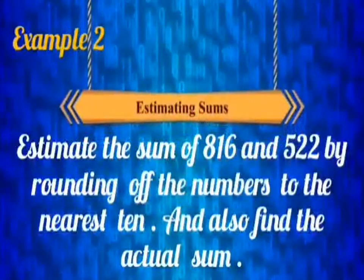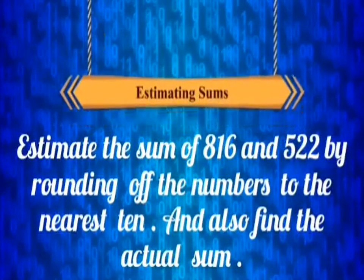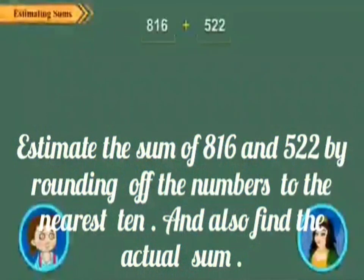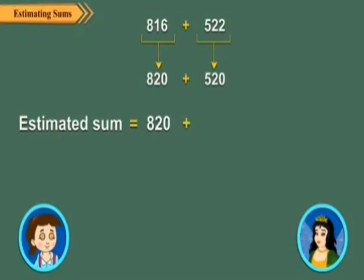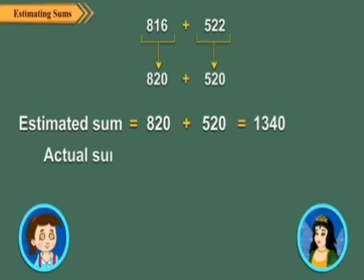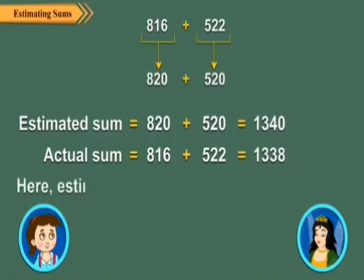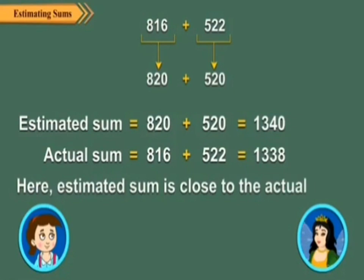Example 2: Estimate the sum of 816 and 522 by rounding off the numbers to the nearest 10. 816 rounded off to the nearest 10 is 820. 522 rounded off to the nearest 10 is 520. So the estimated sum is 820 plus 520, which equals 1340. The actual sum is 816 plus 522, which equals 1338. Here, the estimated sum is close to the actual sum — that is, greater than the actual sum.